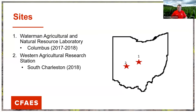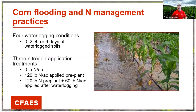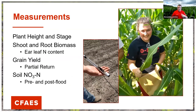To look at this, we conducted a preliminary study at two sites: the Waterman Agricultural Natural Resources Laboratory and the Western Agricultural Research Station in South Charleston, Ohio. We waterlogged corn for zero, two, four, or six days. We had three nitrogen application treatments: no nitrogen as a baseline, 120 pounds applied pre-plant, and 120 pounds pre-plant plus 60 pounds applied after waterlogging ended as a remedial side-dress application. Taylor Dill was the master's student working on this project.